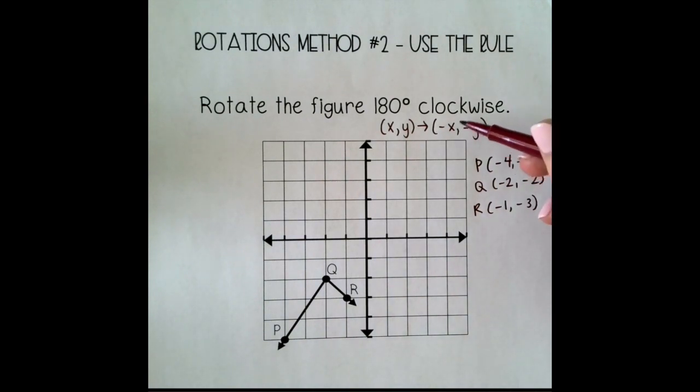Okay, so the coordinate rule just tells us what to do with the coordinate points. So this rule is telling me that I need to change the sign of the x value and change the sign of the y value. Be careful. The negative does not mean that the number has to be negative. It just means change the sign. So all of these numbers started out as negative. That means they're all going to change to positive.